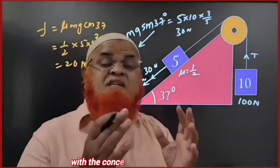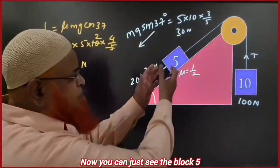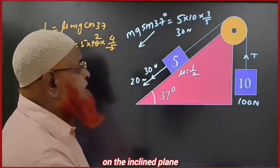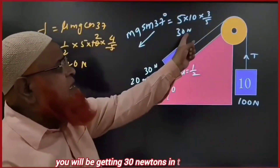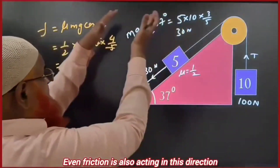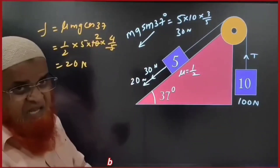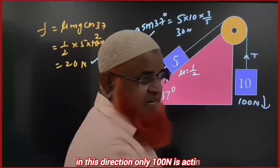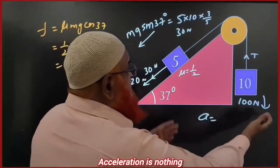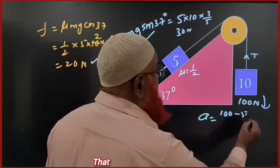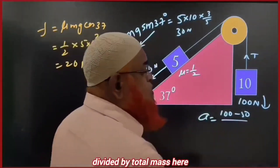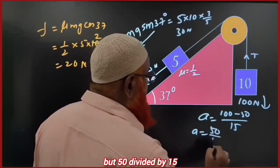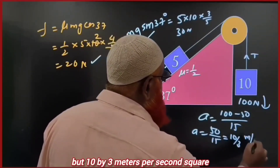This is an inclined plane with friction. The block has multiple forces: mg sin theta acting along the incline gives 30 N, and friction mu mg cos theta acting in the same direction gives 20 N. So 30 plus 20 equals 50 N resisting, while 100 N acts in the other direction. Acceleration is (100 minus 50) divided by total mass (5 plus 10 = 15), giving 50/15 equal to 10/3 meters per second squared.